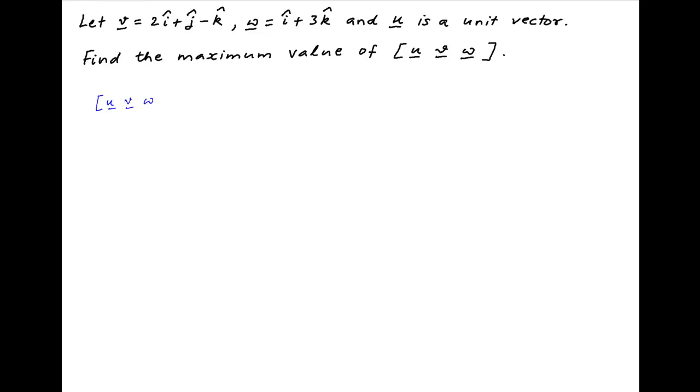The scalar triple product of vectors u, v, and w is equal to vector u dot the cross product of vector v and vector w.